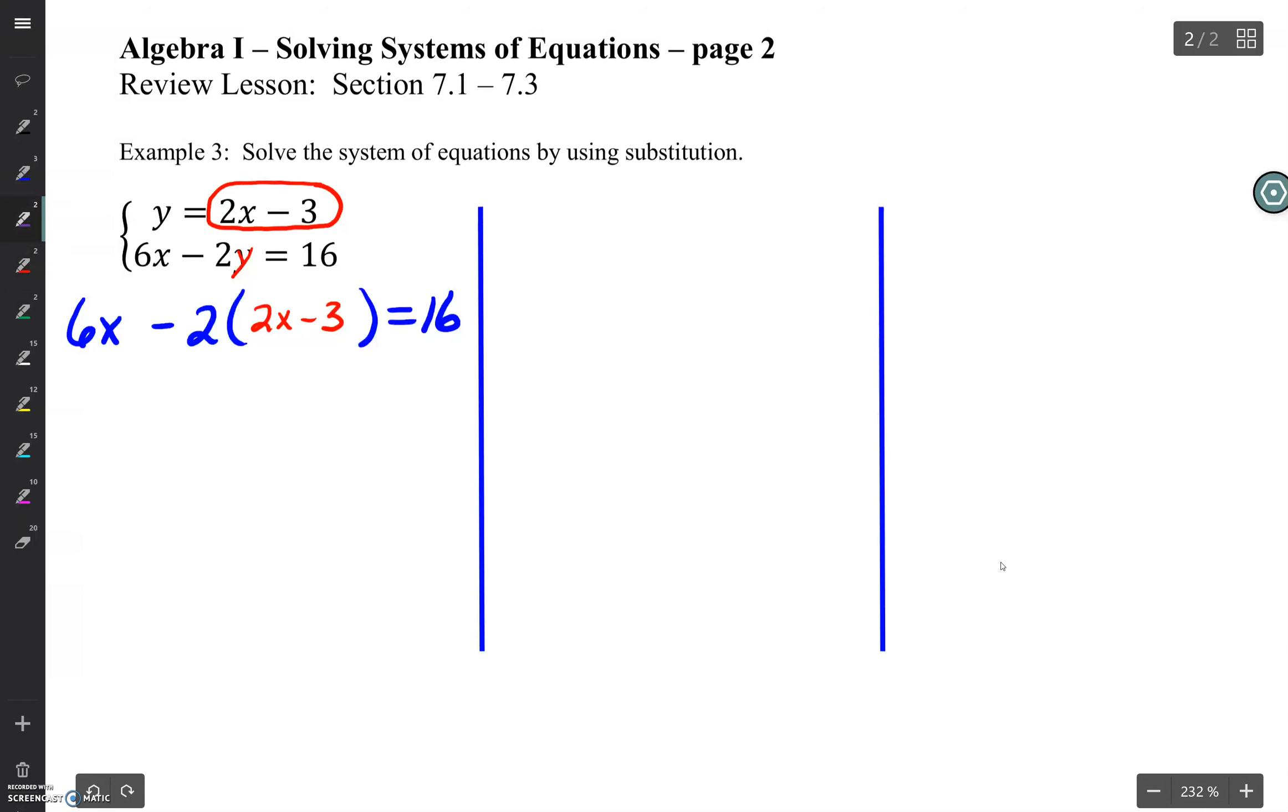Now we're going to think through how to solve this. If we're going to walk through this, I want you to distribute. Distributing this, we have to really pay attention to the minus 2 in the front. So minus 2 times 2x is going to be minus 4x.